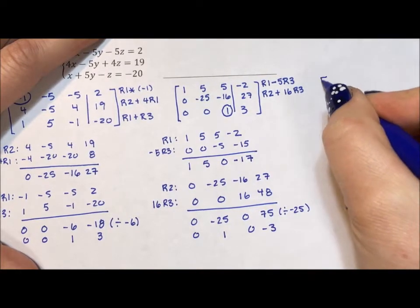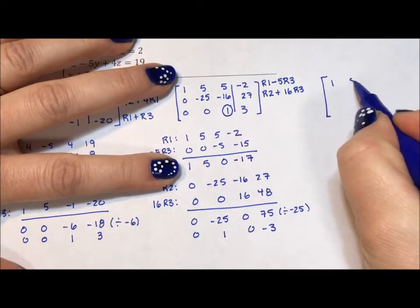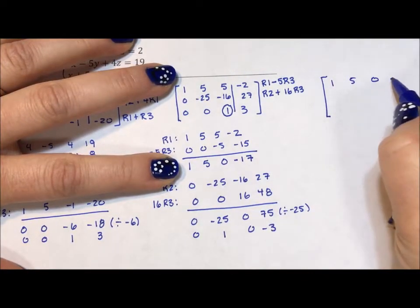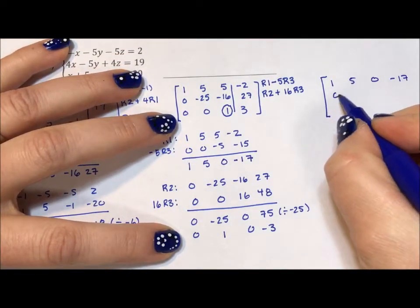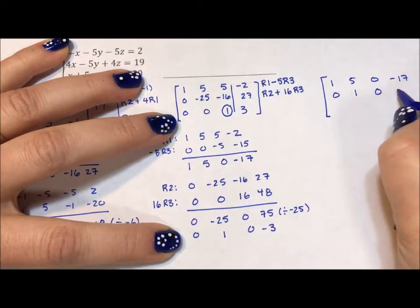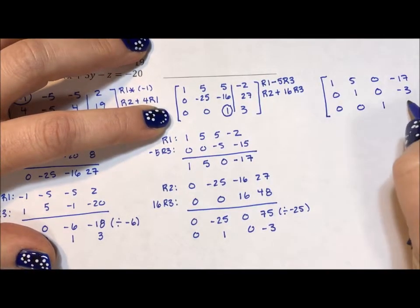So now I have a 1, 5, 0, -17, a 0, 1, 0, -3, and a 0, 0, 1, 3.